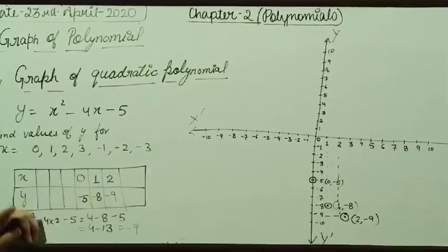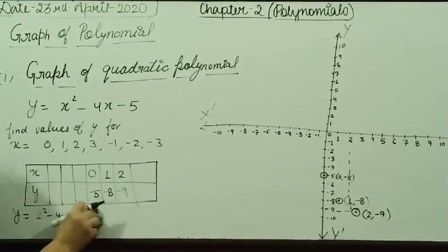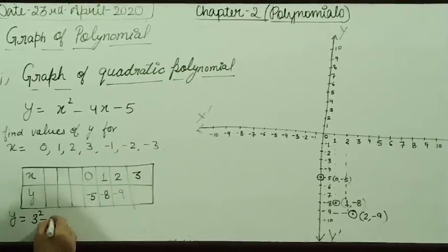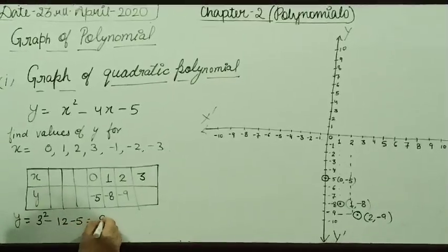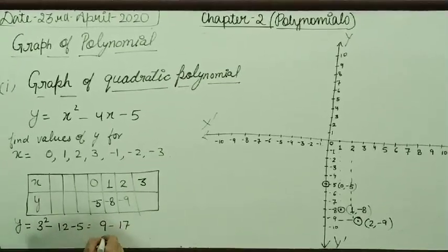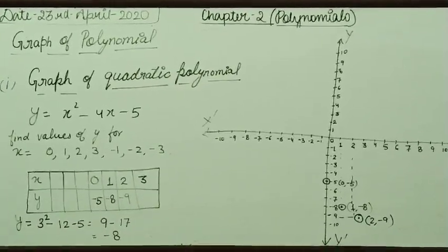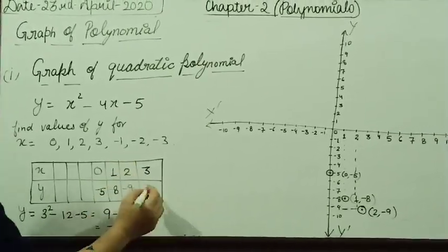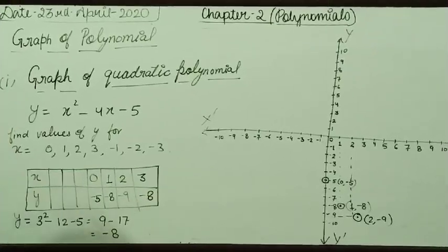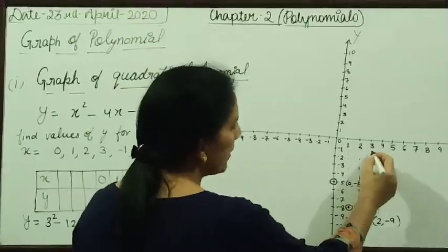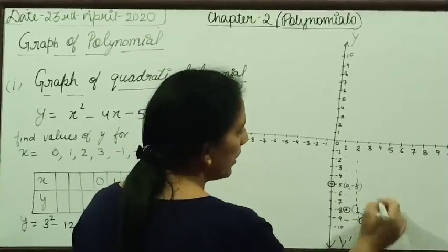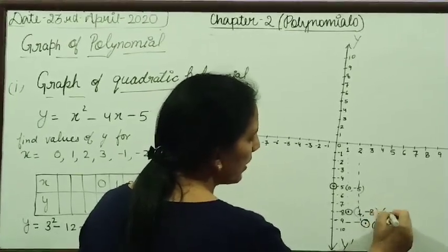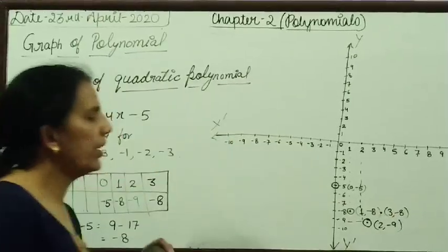Now, when x is equal to 3: 3 square minus 4 into 3 minus 5. That is 9 minus 12 minus 5, which is 9 minus 17. So, you are getting minus 8. When the value of x is 3, y is minus 8. So, the point is (3, -8).